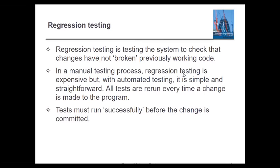Before a change is committed — meaning saved — once the test cases run successfully, whatever changes you made in your program are saved properly. Regression testing works on your system, and if it ever breaks any working code, automated testing makes it simple and straightforward. It works module by module and re-runs the program if any fault error occurs.